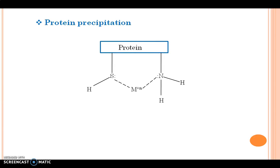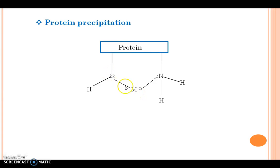Here is the formation of chelates, in which SH and NH groups act as polar groups and metal ions act as Lewis acids, resulting in the formation of a chelate with the protein.